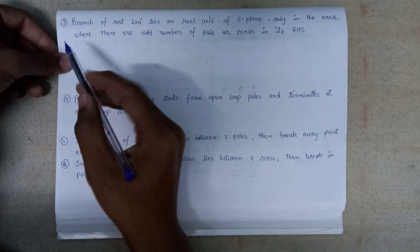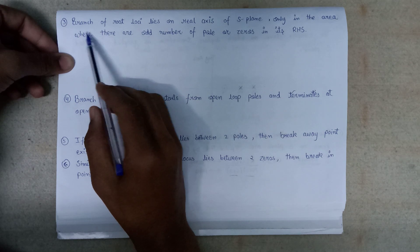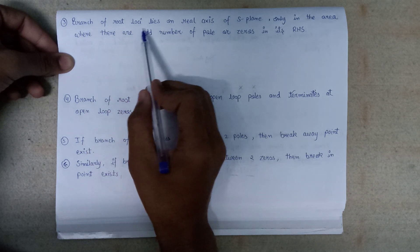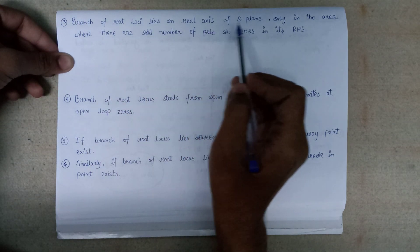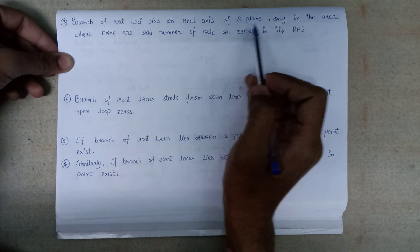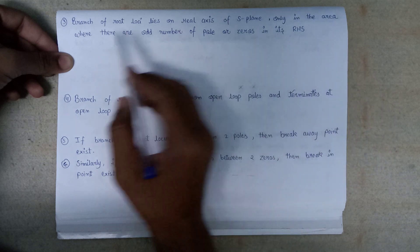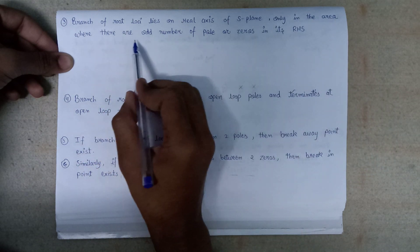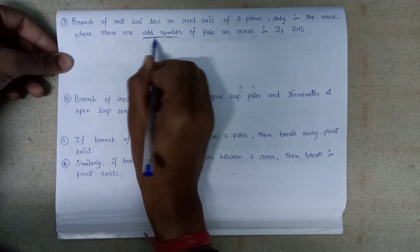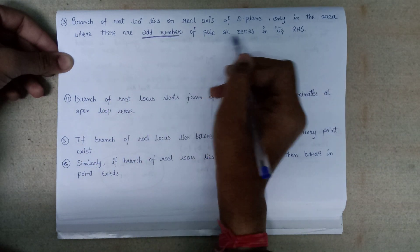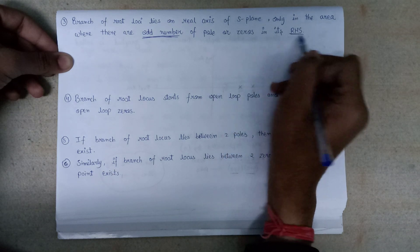The third important point: the branch of the root locus lies on the real axis of the S-plane only in areas where there are an odd number of poles or zeros to the right-hand side.